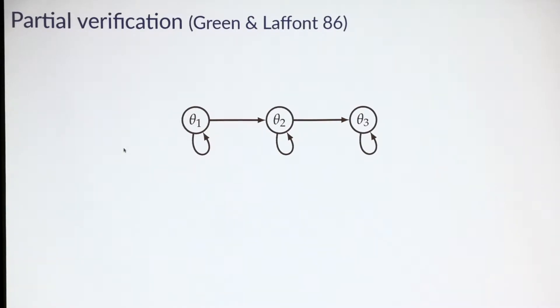The standard way of modeling verification in mechanism design began with Green and Laffont in 1986, and their approach has since become standard. What they do is exogenously restrict which reports each type can make. I want to start with a simple three-type example that captures their idea.